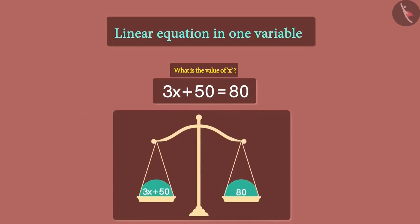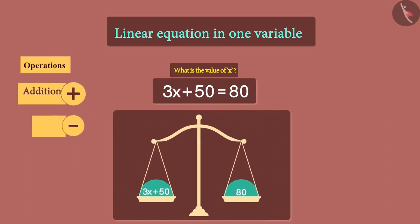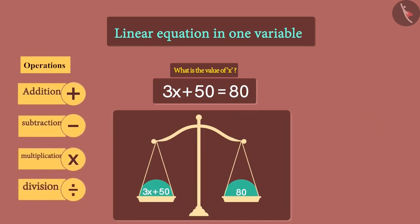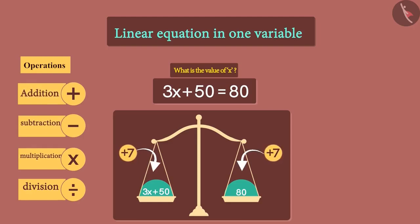Similarly, in our equation, we can perform four operations. They are addition, subtraction, multiplication and division. So, if we add a number on one side of the equation, then we have to add the same number on the other side. Similarly, if we subtract, multiply or divide, we have to do it on both sides.